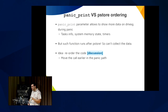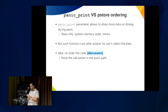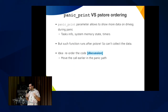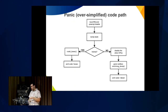We want more information, and one way is through the panic_print parameter, which shows more information on the kernel message during panic — like task information, memory state, backtraces for all other CPUs. But panic_print is called after pstore, so we collect the pstore log and then panic_print runs with more information — that information is lost. So we had an idea: reorder this call and call panic_print before. Let's talk a bit about the code path in panic.